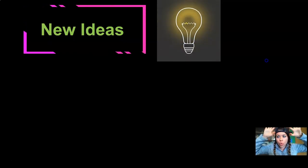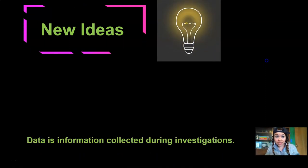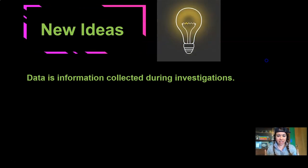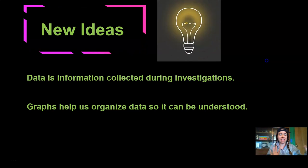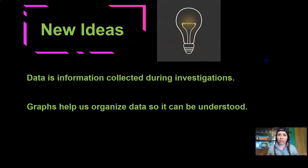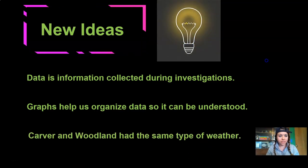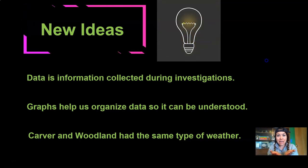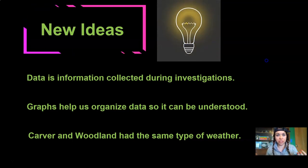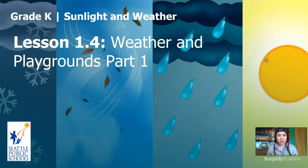So let's think about what new ideas we've gotten today from this part of the lesson. Here's what I learned: data is information collected during investigations. Graphs help us organize data so that it can be understood. Wasn't it so much easier to look at and compare the two different schools once we had their weather data in a graph? And Carver and Woodland Elementary had the same type of weather — that makes me really think about what those principals told us about the different temperatures at the playgrounds. That's it for Lesson 1.4, Weather and Playgrounds Part 1. I'll see you right back here for Weather and Playgrounds Part 2. See you then, bye bye!